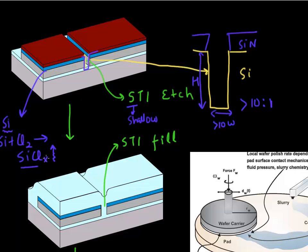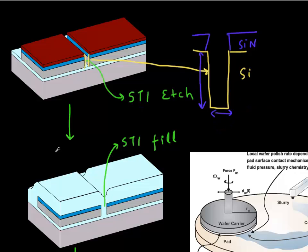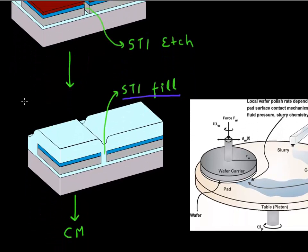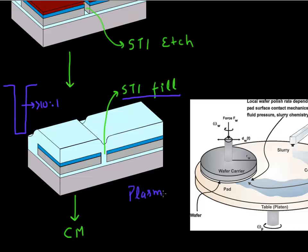The next thing you do after you have made this STI feature is fill it. So the next step is to fill this trench with an oxide. Again, the main challenge is that you have a very high aspect ratio feature to fill — a trench with an aspect ratio of more than 10 to 1. So we use either a plasma-based or a very high density plasma to fill up this shallow trench isolation.